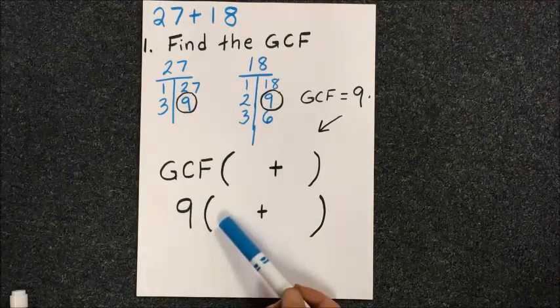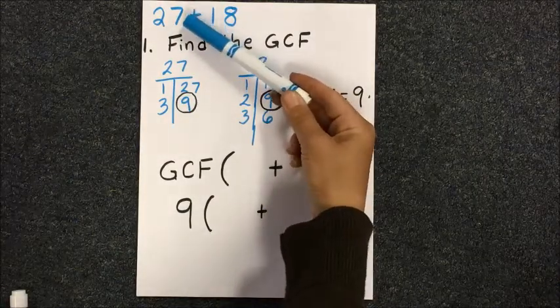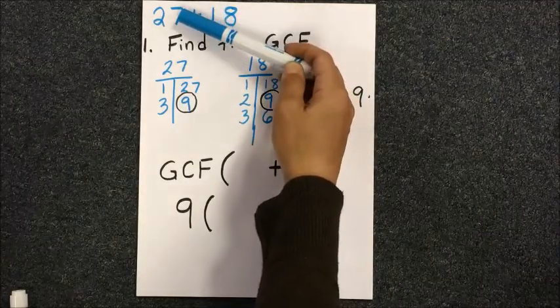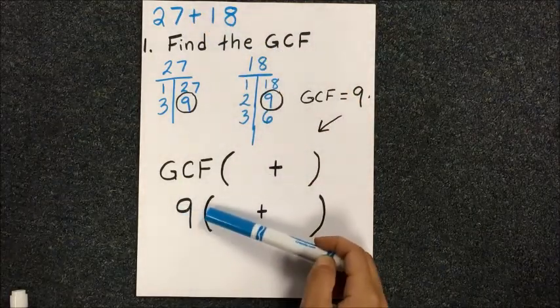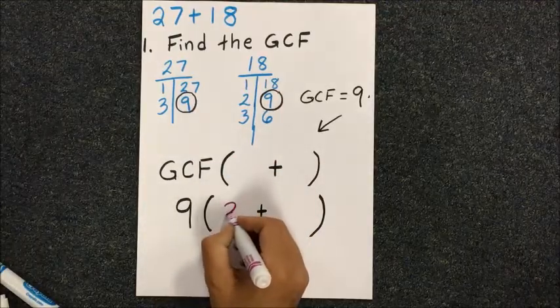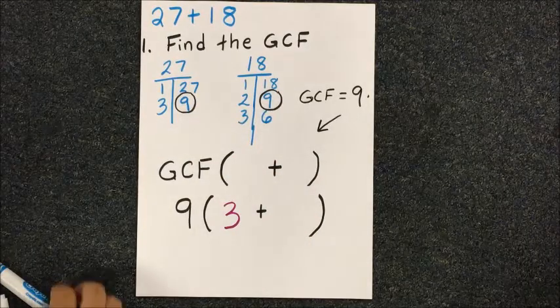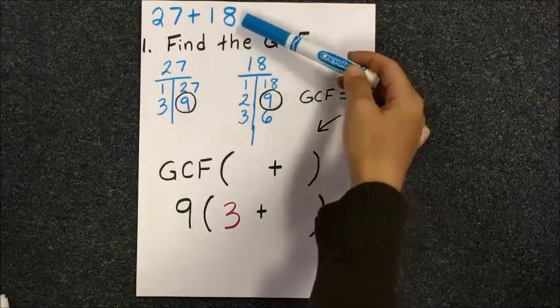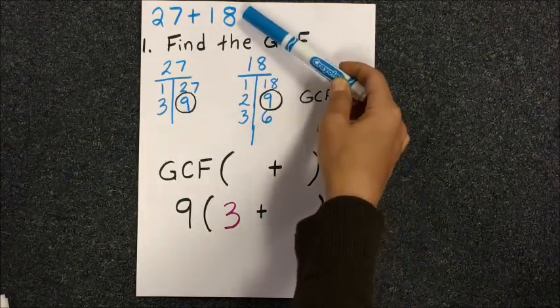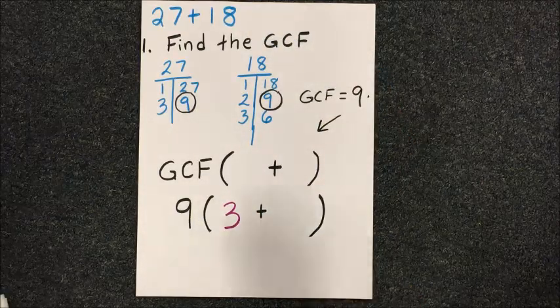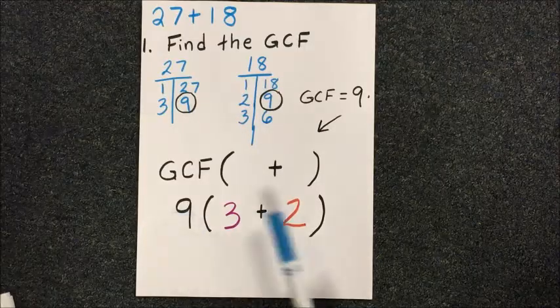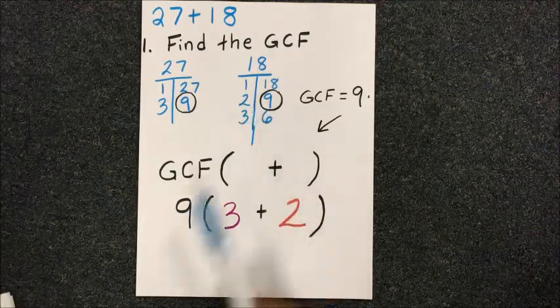How do we find those other numbers? We have to go back to the original number of 27 and know what the factors are. 9 times something gives us 27, and we should know that 9 times 3 does that. For 18, 9 times 2 gives us 18. The t-chart also helps because it already puts those factors together.